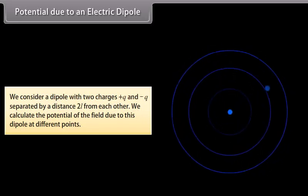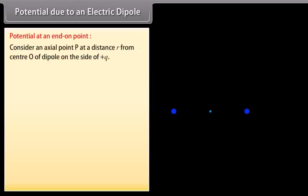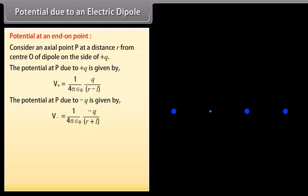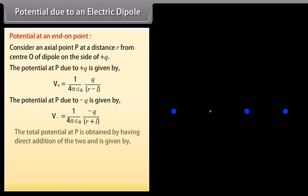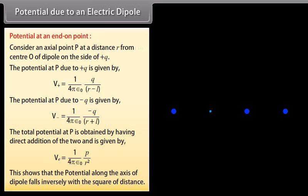Potential due to an electric dipole. Consider a dipole with two charges plus Q and minus Q separated by a distance 2L from each other. We calculate the potential of the field due to this dipole at different points. For an axial point P at a distance R from center O of the dipole on the side of plus Q: the potential due to plus Q is V_positive equals 1 over 4π ε₀ multiplied by Q upon (R minus L), and the potential due to minus Q is V_negative equals 1 over 4π ε₀ multiplied by minus Q upon (R plus L). The total potential at P is V_E equals 1 over 4π ε₀ multiplied by P upon R squared. This shows that the potential along the axis of a dipole falls inversely with the square of distance.